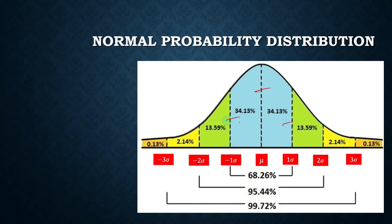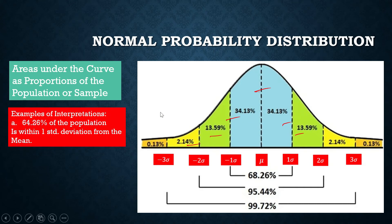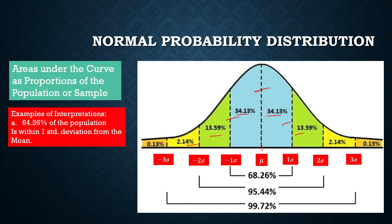Now let us interpret these areas as proportions of the population or sample. Adding 34.13% + 34.13% gives the area from negative 1 standard deviation to positive 1 standard deviation, which equals 0.6426 or 64.26%. This means 64.26% of the population or sample falls within one standard deviation from the mean.